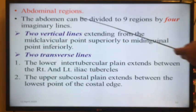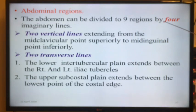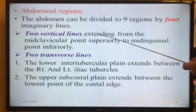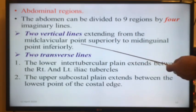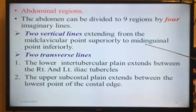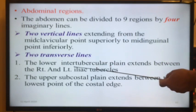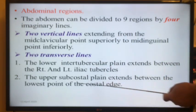The abdomen can be divided into nine regions, as discussed. This is done by four imaginary lines: two vertical lines extending from the mid-clavicular point superiorly to the mid-inguinal inferiorly, and two transverse lines — the inter-tubercular line and the sub-costal line.